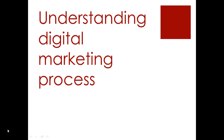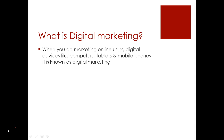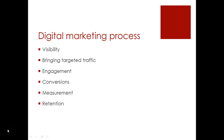Let's proceed further and talk about the digital marketing process. Digital marketing is a very big thing. So first of all, what is digital marketing? As simple as it is: when you start marketing online using digital devices, this is known as digital marketing. Digital devices include computers, tablets, mobile phones, and digital watches. When you start marketing on these digital devices, that is digital marketing.